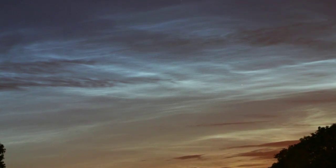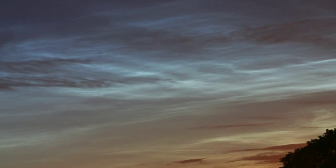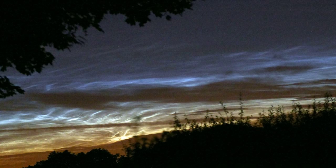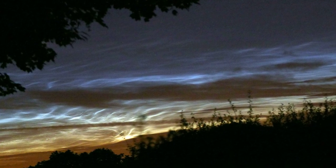There's one phenomenon that you definitely don't need any equipment to see during the summer months. Noctilucent, or night-shining clouds, appear in the hours of twilight before sunrise and after sunset. They're clouds of tiny ice crystals that appear to glow this ethereal bluish-white color.